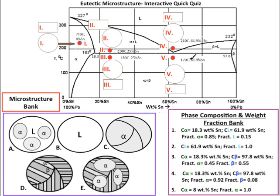Here's question 9, at the point 170 degrees Celsius and 61.9% Sn — so at Roman numeral 5, or this red dot right there — what is the phase composition and weight fraction? Your answer would go in this box here, and your choices are 1, 2, 3, 4, and 5.